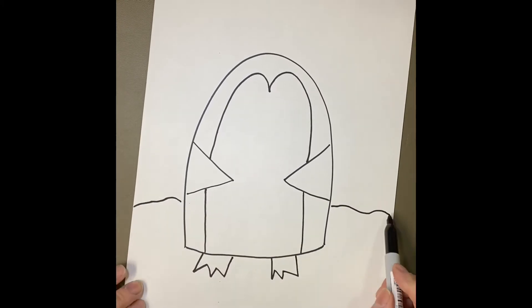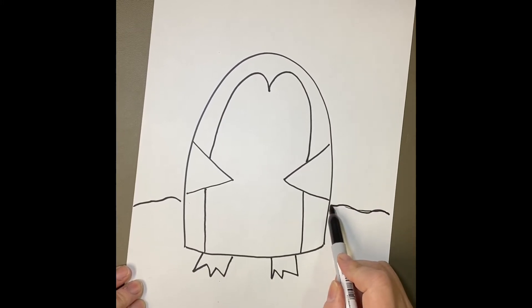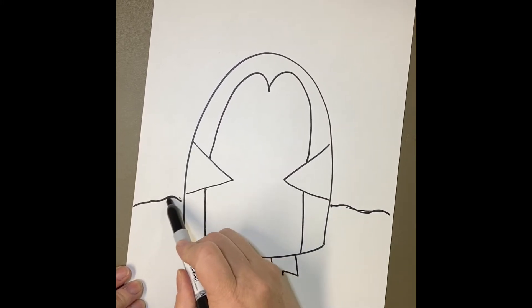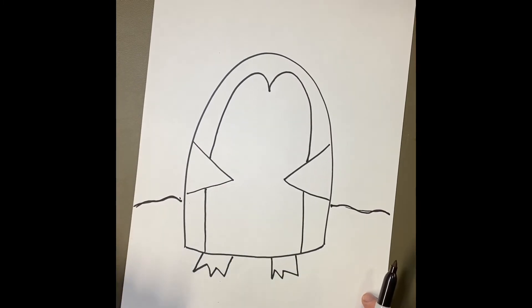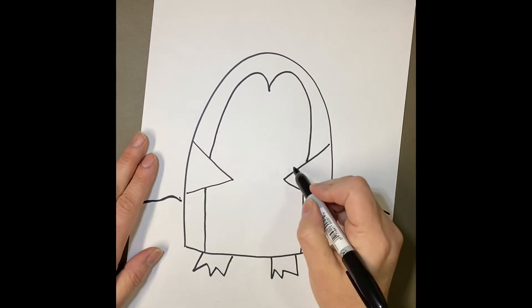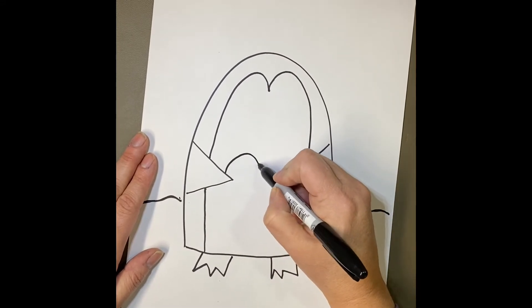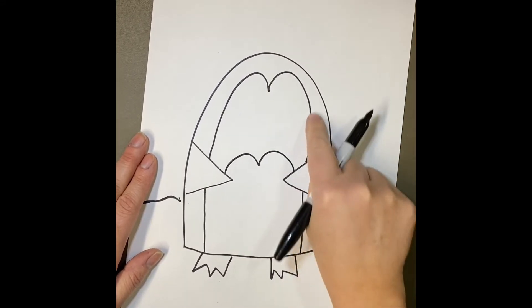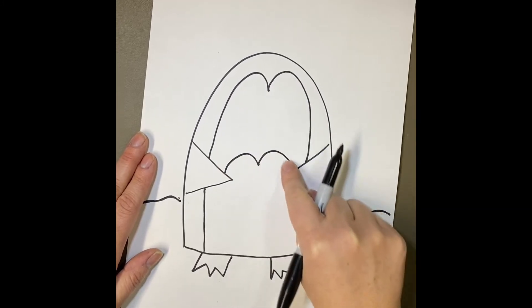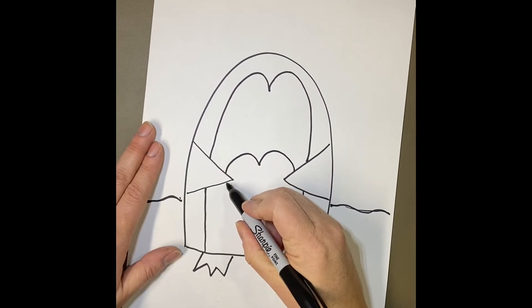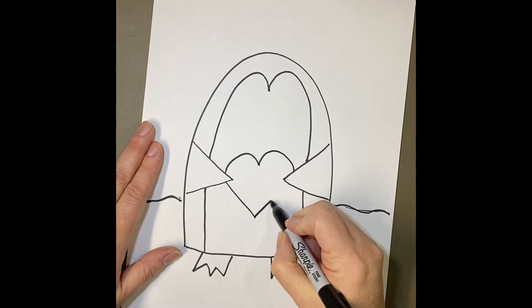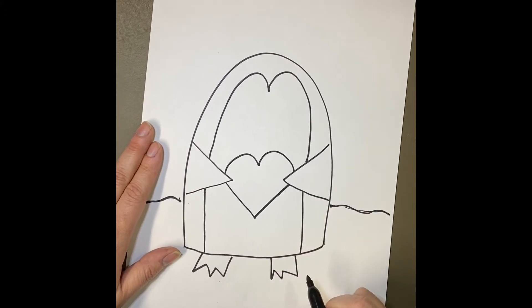Now remember I said our penguin's holding a heart, so from one flipper to the other one I'm going to make another bump bump. Curves here, curves here, same line. Now down here I'm going to make like a letter V. Now my penguin's holding the heart, kind of like an M and a V.